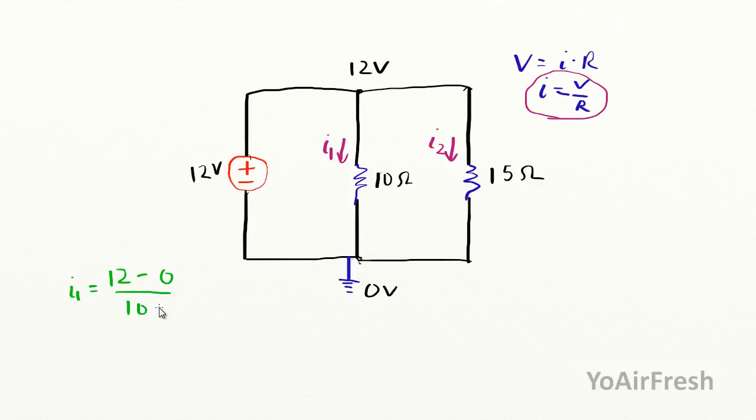So we have I sub 1. If you want to change that to a decimal, that's 1.2 amps. Sometimes it's easier to work with the decimals.